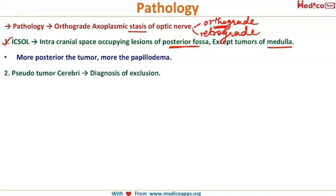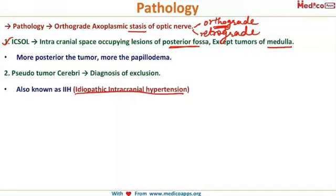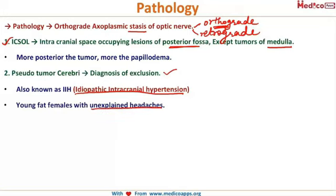The second most common cause is pseudotumor cerebri, also known as idiopathic intracranial hypertension (IIH). It is a diagnosis of exclusion. You would suspect this in young, obese females with unexplained headaches — once all other causes have been ruled out, you conclude the patient has IIH.